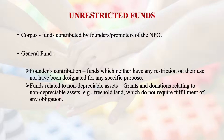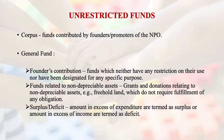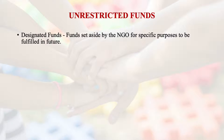Funds related to non-depreciable assets are grants and donations related to assets like freehold land, which do not carry any conditions — they have simply been donated in the name of that organization. Surplus is the amount in excess of expenditure, and deficit is the amount in excess of income. Designated funds are funds set aside by the NGO for specific activities to be fulfilled in the future, invested so those activities can be carried out.